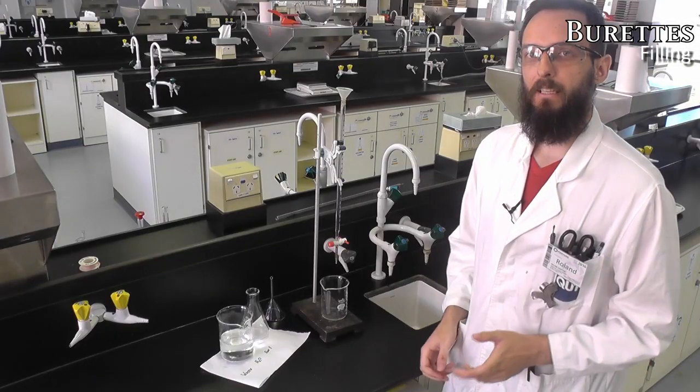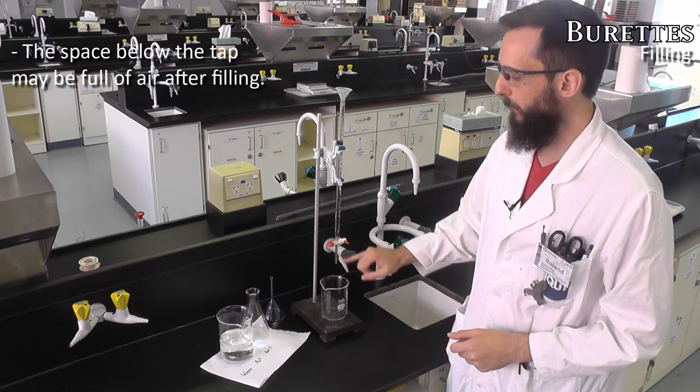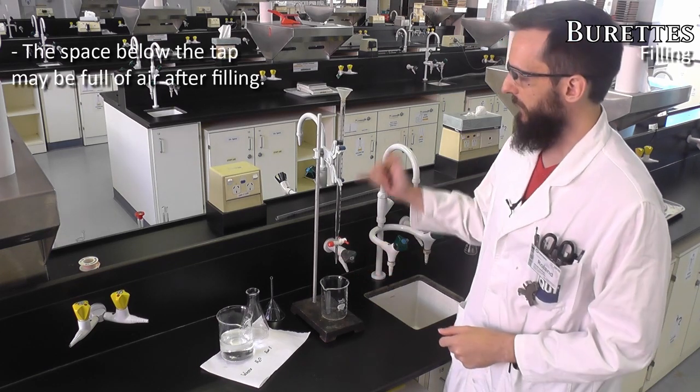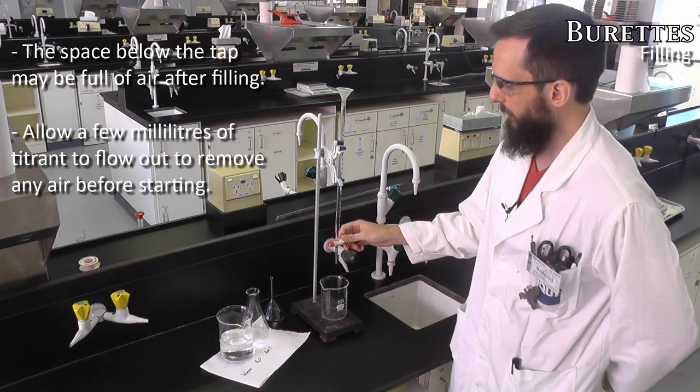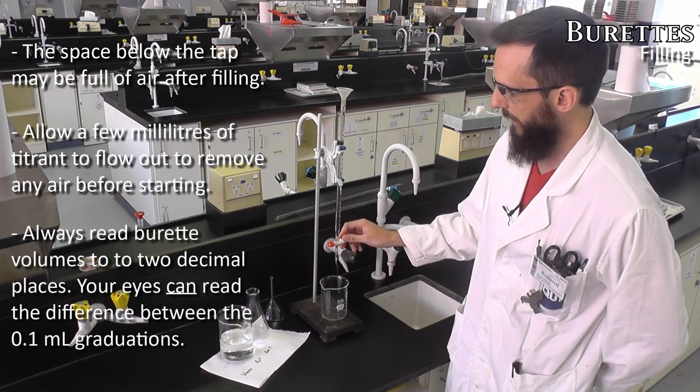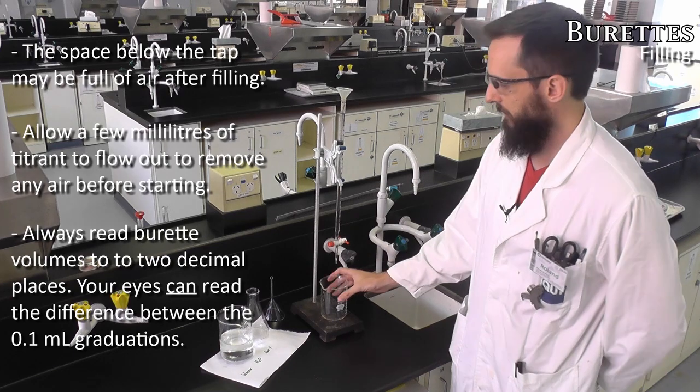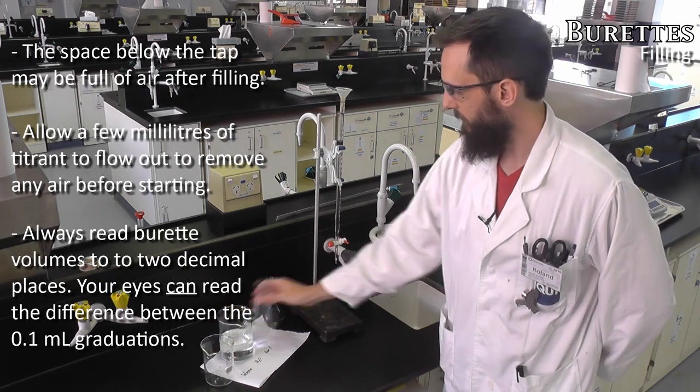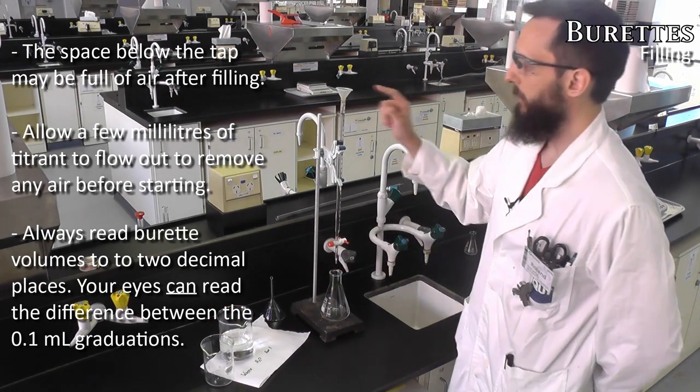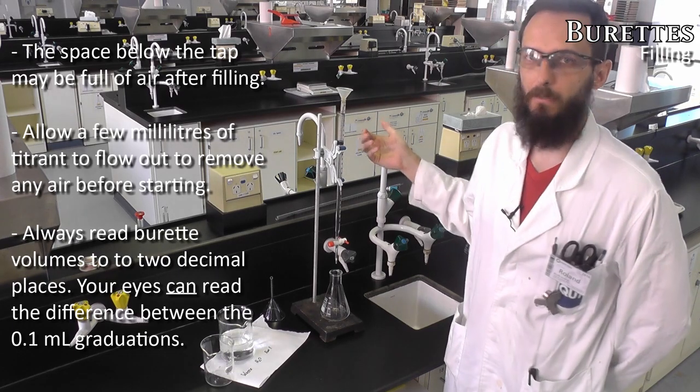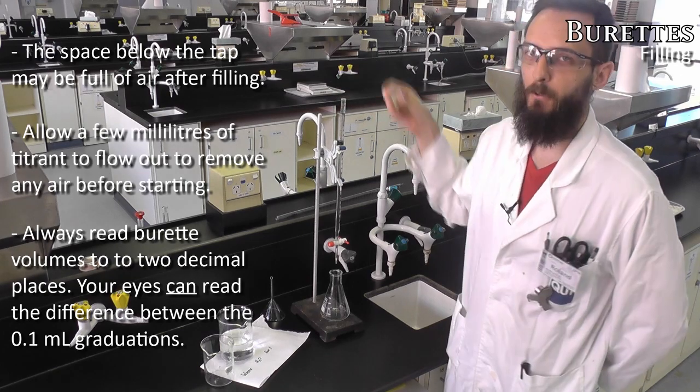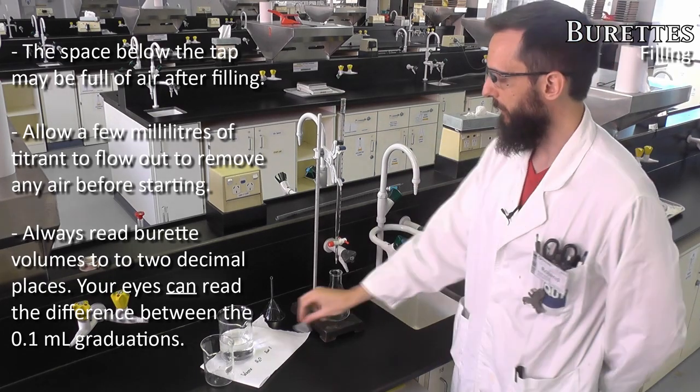Now before we start titrating it's important to note that there's a small void volume down here where the liquid has not yet gone because we had our tap closed. So with the waste beaker underneath just run that tap open for a few seconds until all the air bubbles leave. Then we can replace that with our reaction and always take out this funnel from the top because if it were to drip in any liquid during your titration it would be a volume of liquid you've not accounted for in your experiment.